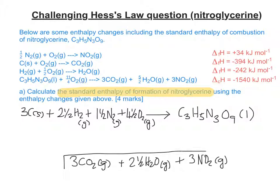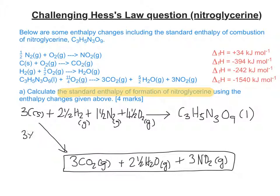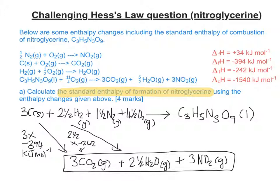So these are our combustion products. When carbon combusts, it's 3 times minus 394, with correct units. When hydrogen combusts, it's 2.5 times minus 242, again with correct units. And when nitrogen combusts, it's not 1.5 — it's 3 times 34.